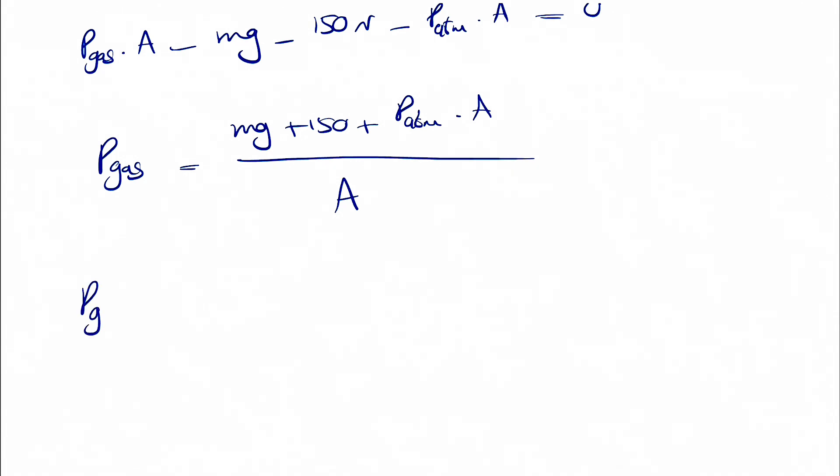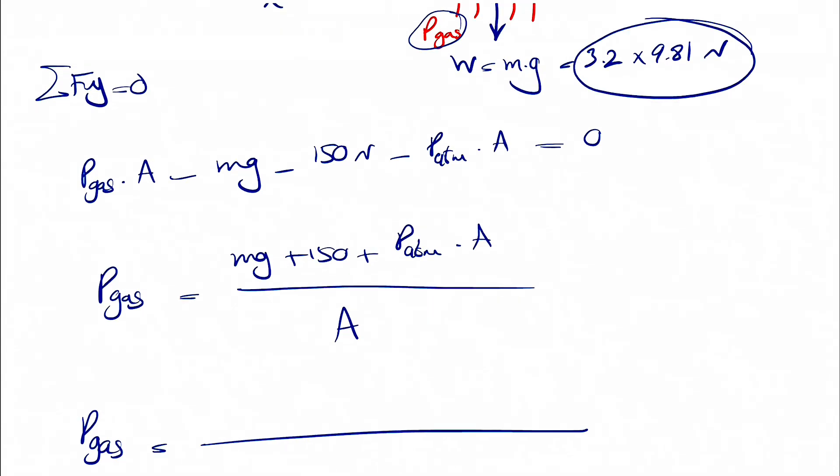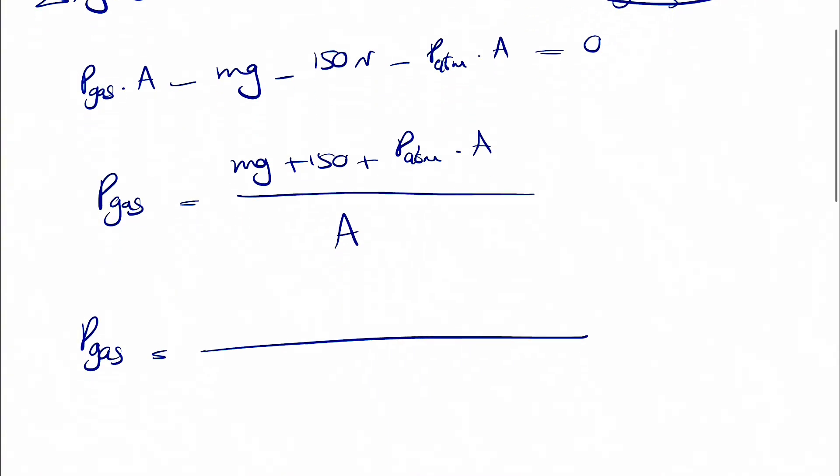But the only thing that we need to keep in mind is the units that we have for each of these. So the mass and g we figure out we have already the mass in kilograms. So if we just multiply kilogram by meter per square second, this is going to give us the newton. So this is pretty easy, 3.2 times 9.81.